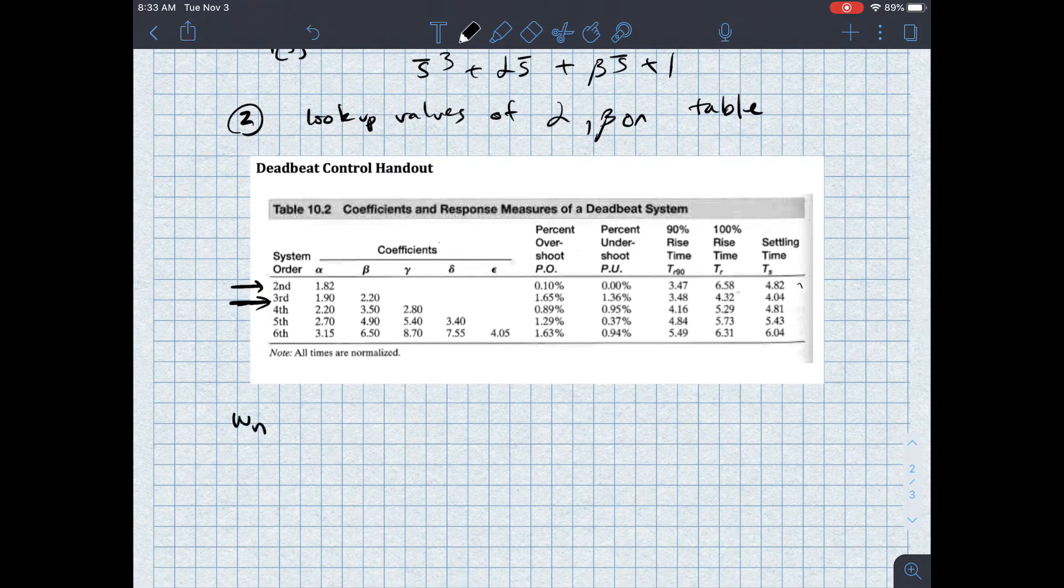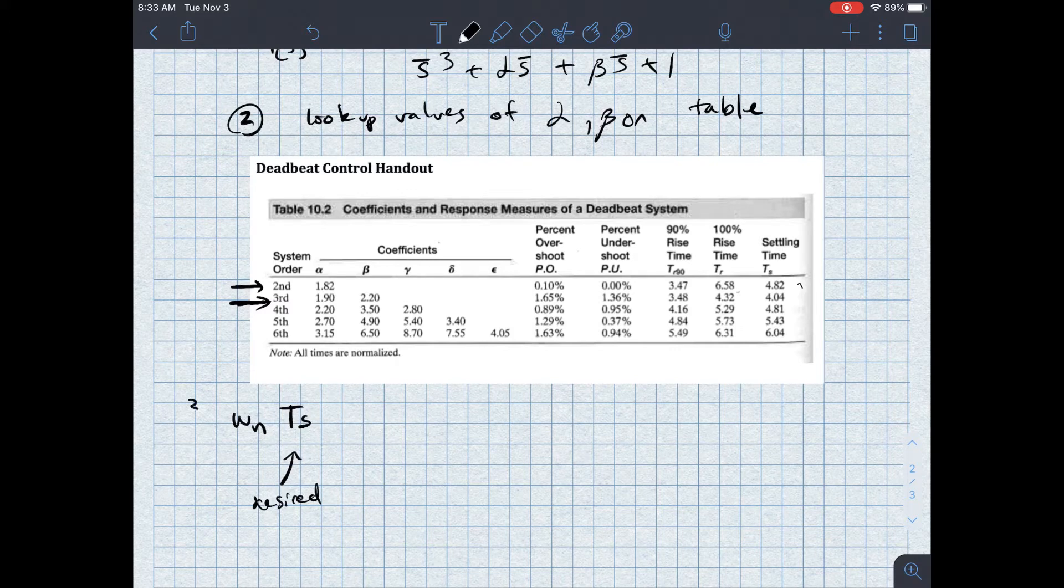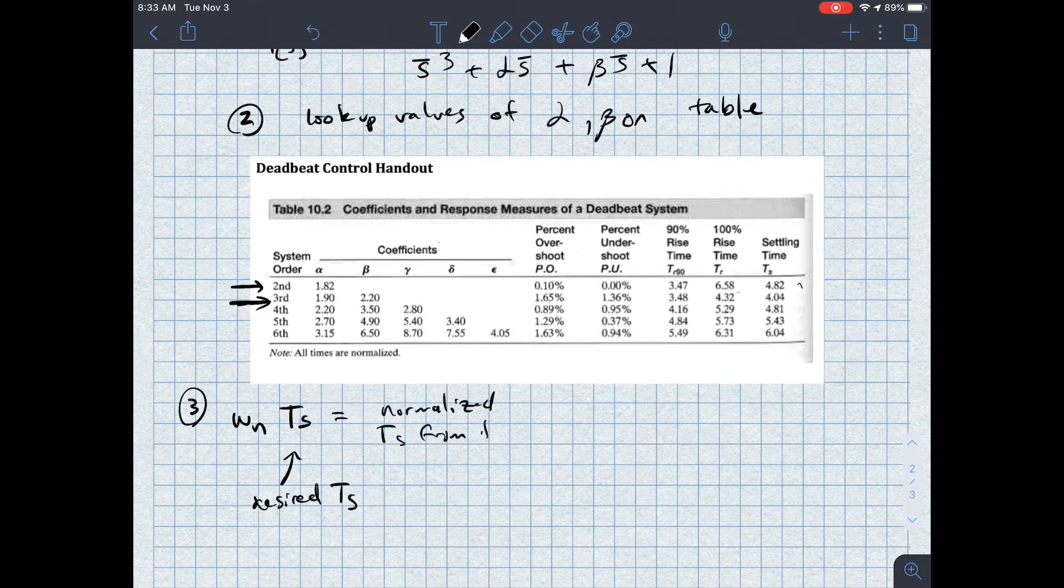So then omega N times TS, which is my desired, this is step three, my desired settling time is equal to the normalized TS from the table. So let's say I'm on this third order. I might have a settling time. I want settling time to be less than one second. And I have this normalized settling time, so I can solve this for omega N.